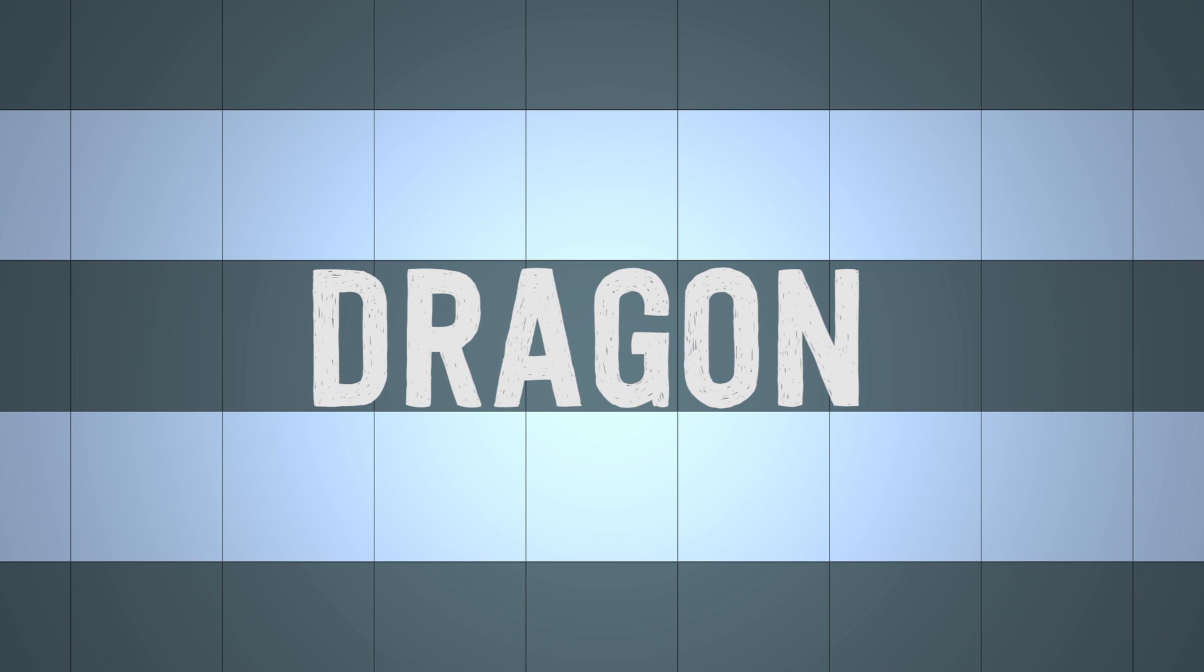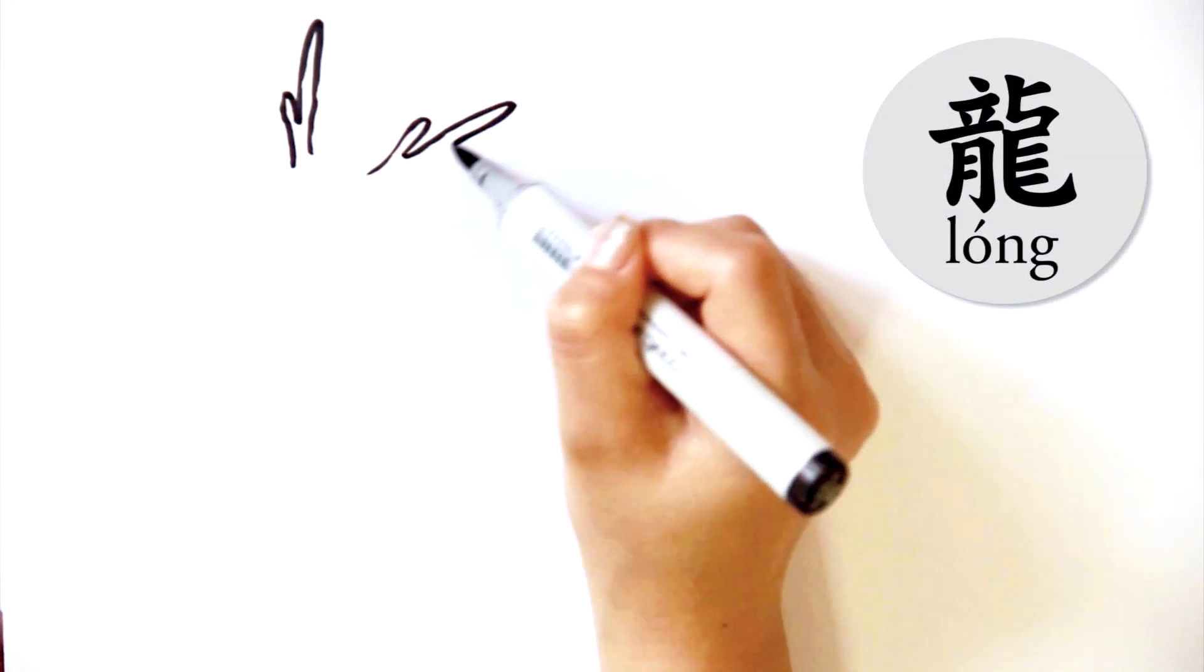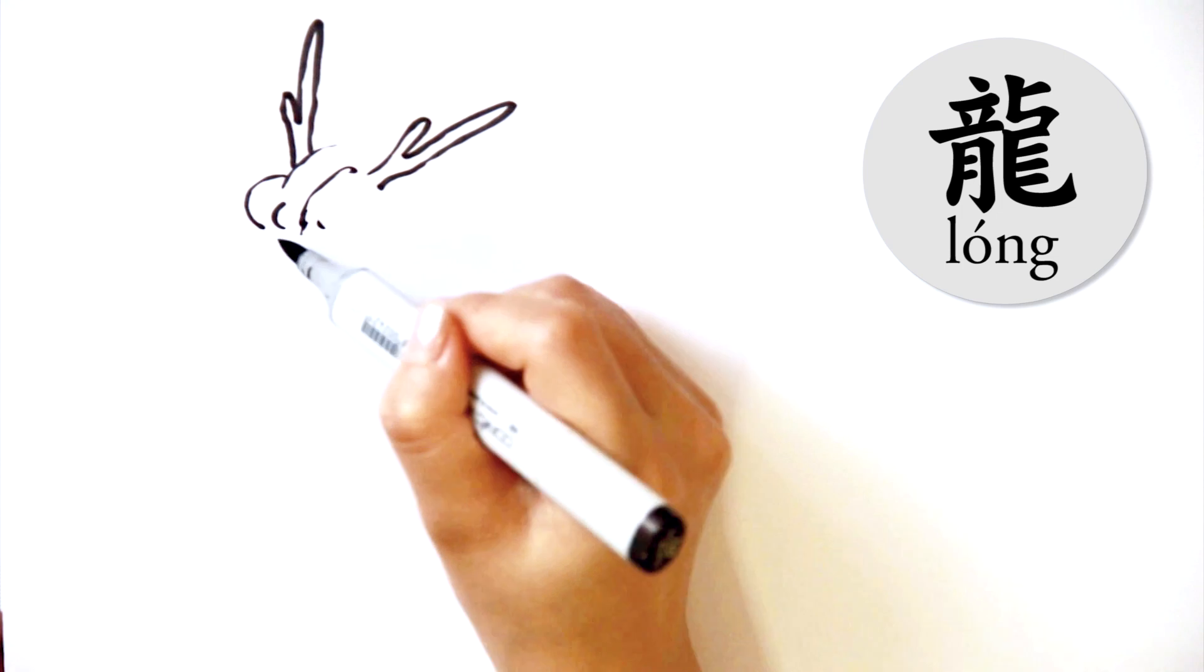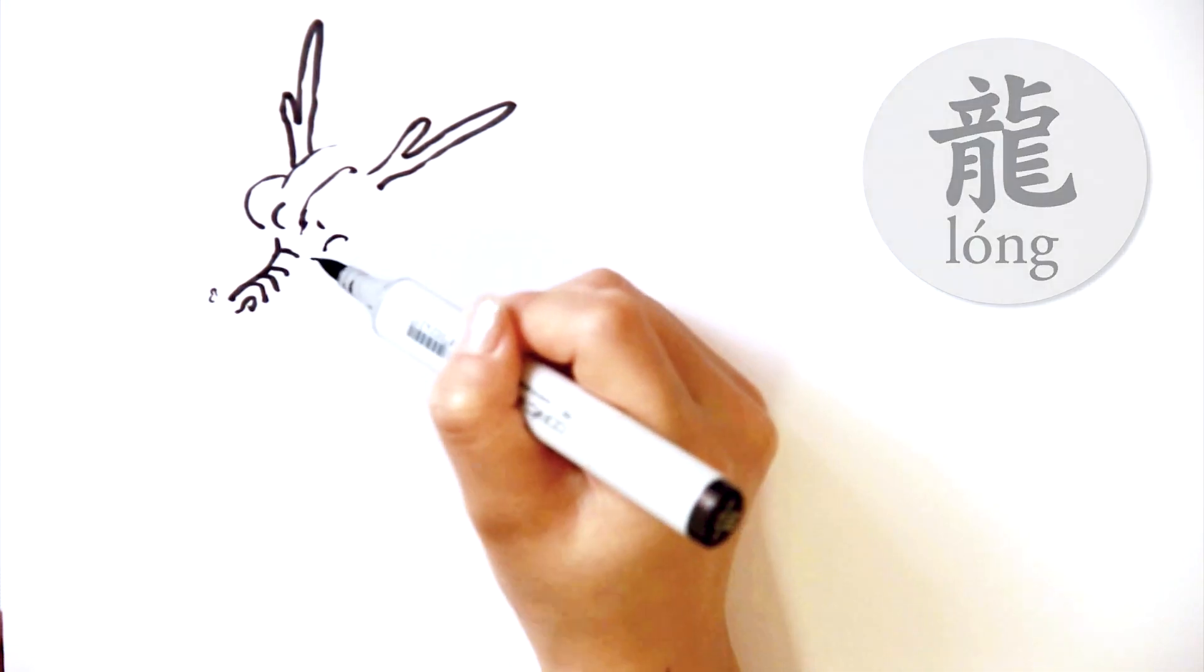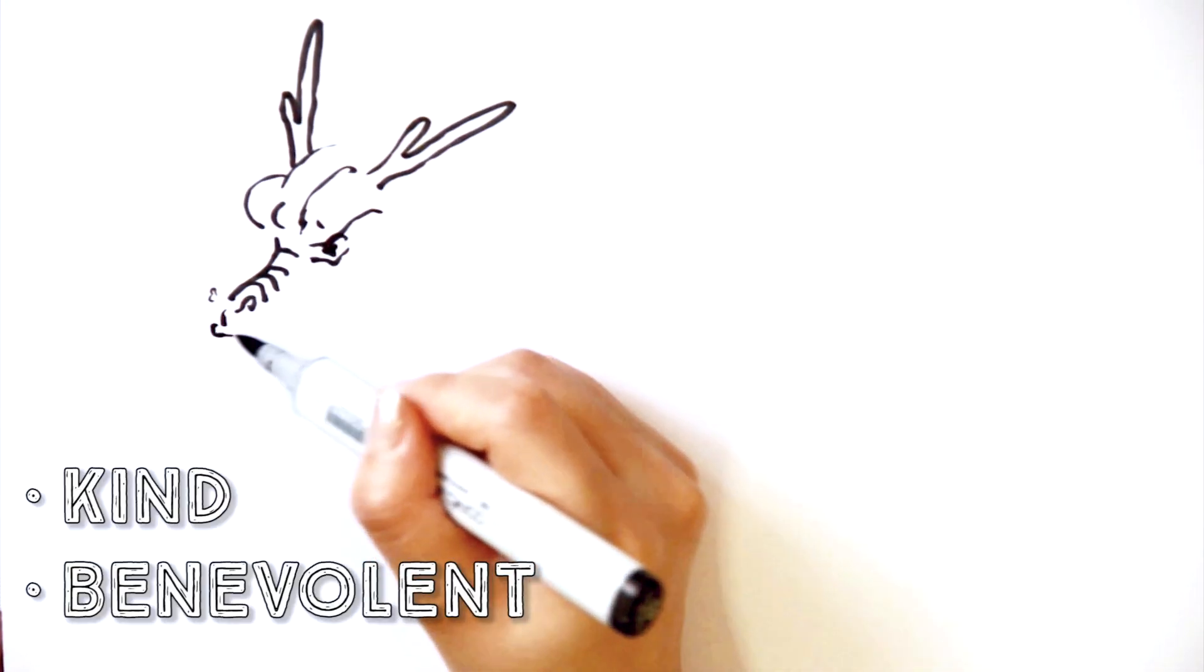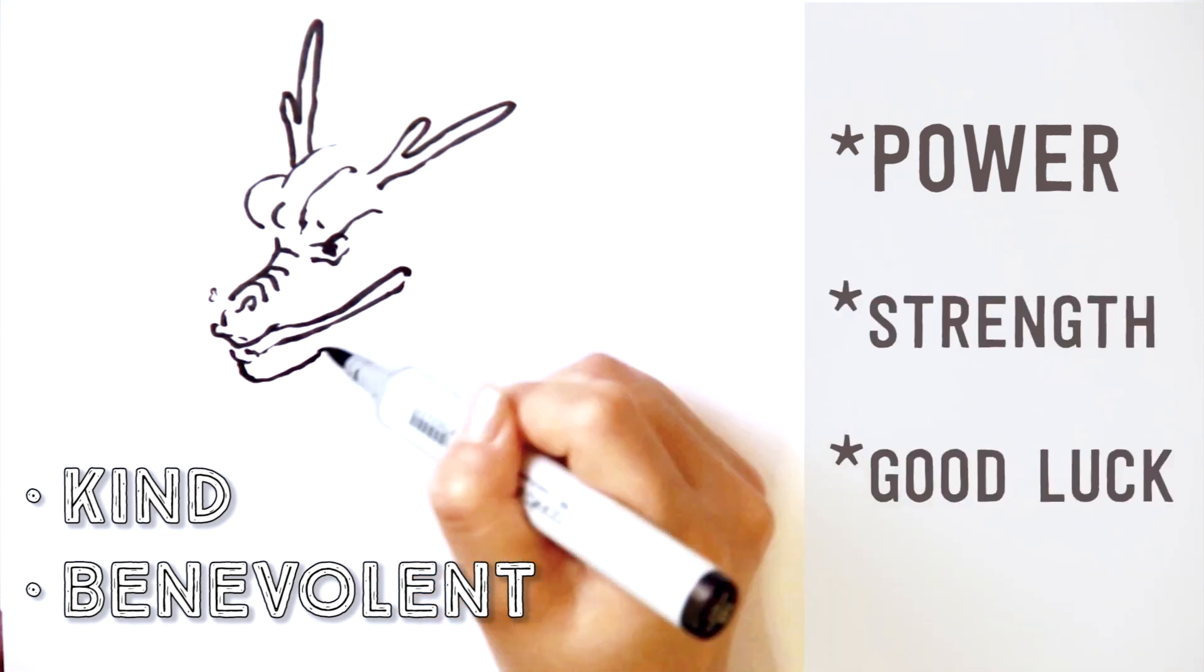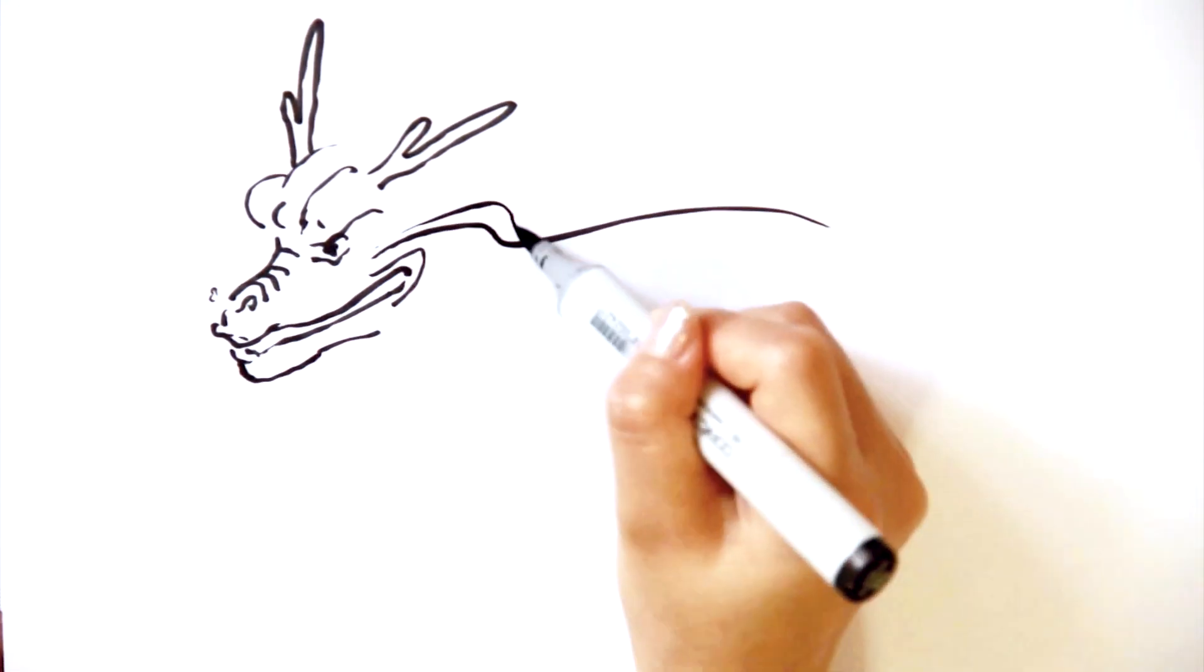First up, the dragon. A lot of you guys might already know that Chinese dragons are different from Western dragons. In Chinese culture, the dragon is a kind and benevolent creature that signifies power, strength, and good luck.